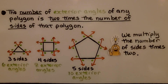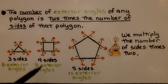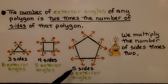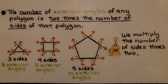The number of exterior angles of any polygon is two times the number of sides. We multiply the number of sides times two. A triangle has three sides: three times two gives six exterior angles. A square has four sides: four times two gives eight exterior angles. A pentagon has five sides: five times two gives ten exterior angles. For any polygon, we multiply the sides by two to find the number of exterior angles.